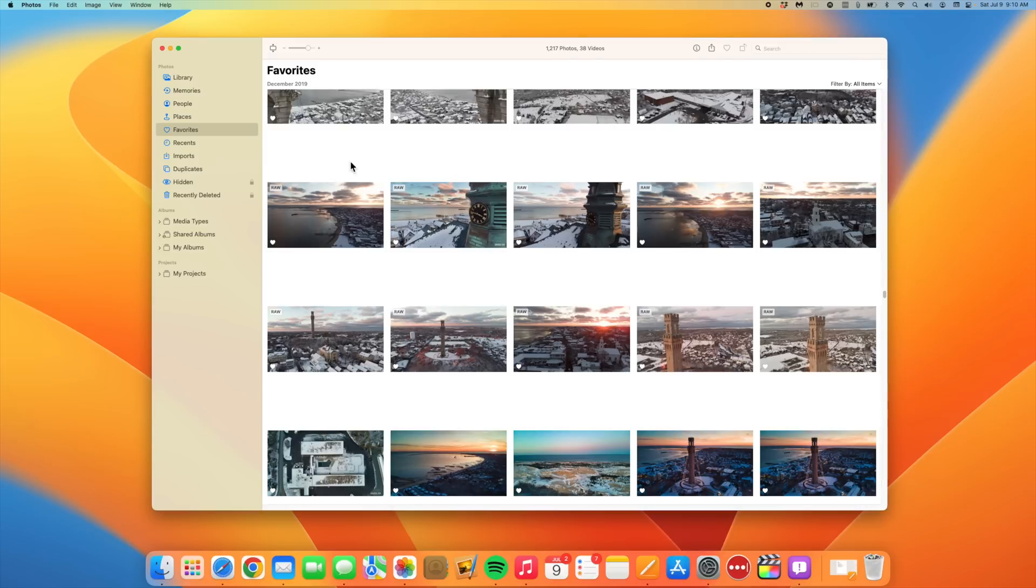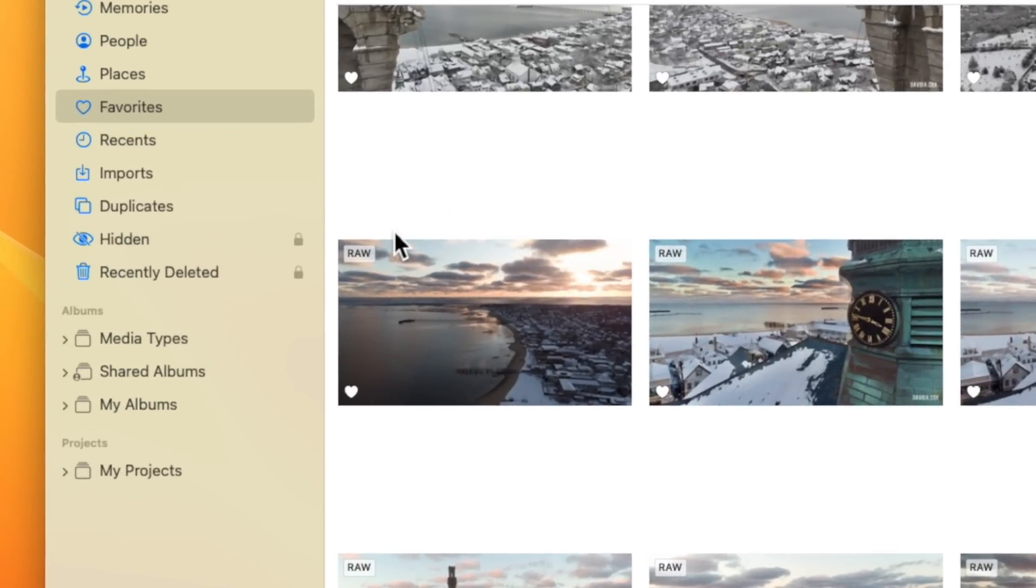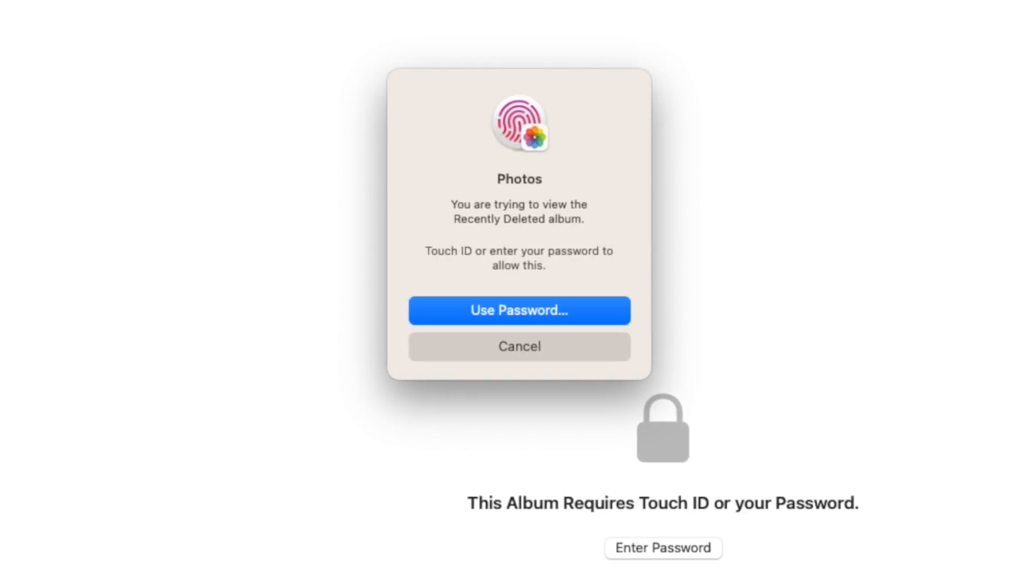At this point, let's open up the Photos app. If you look at the sidebar, you'll notice a lock icon next to recently deleted and hidden albums. So to access those albums, you'll need to either enter in your admin password, use Touch ID, or Face ID.